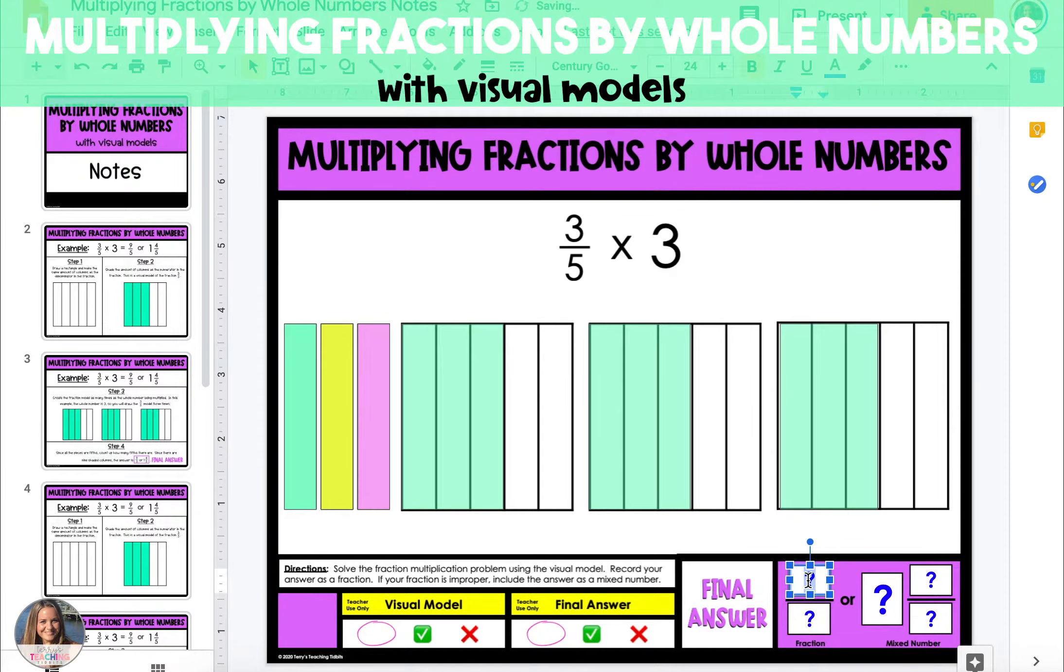Count up how many total fifths you have, which is 3, 6, 9 fifths. Then you're going to change that into a mixed number, so you have one whole and four fifths.